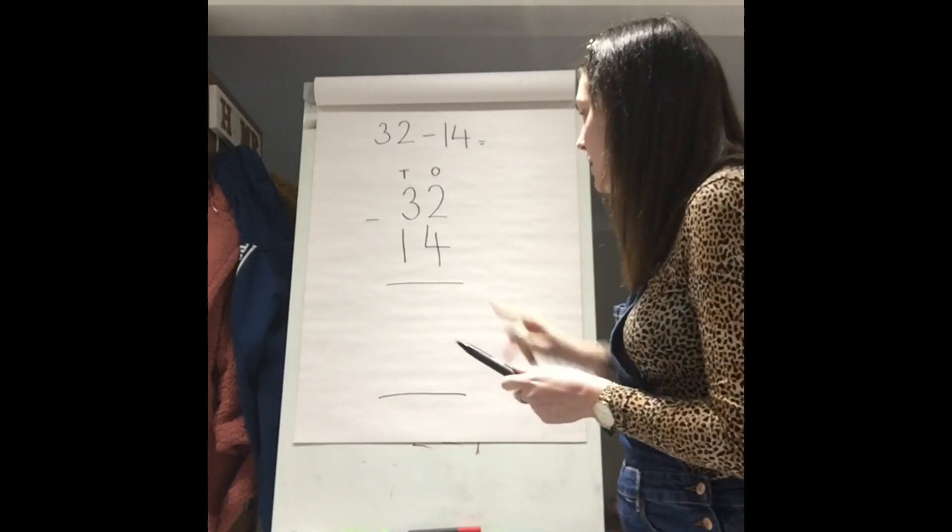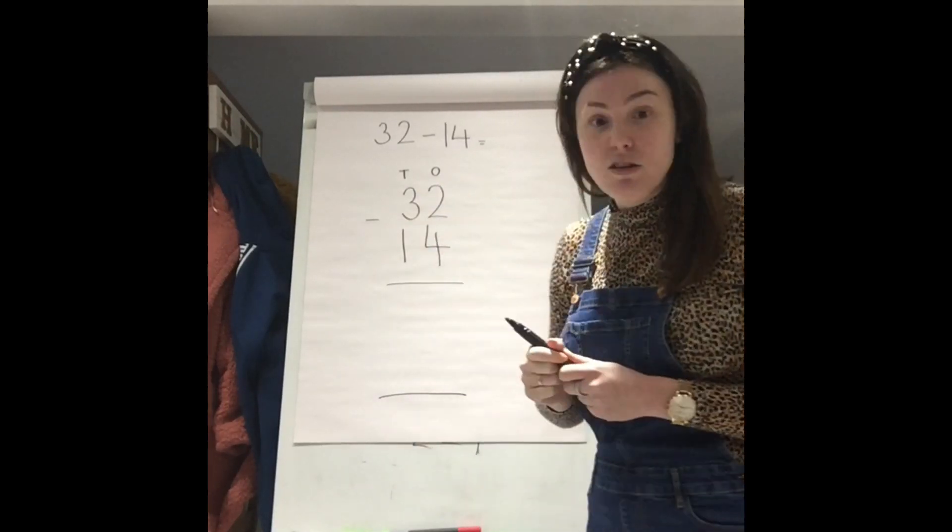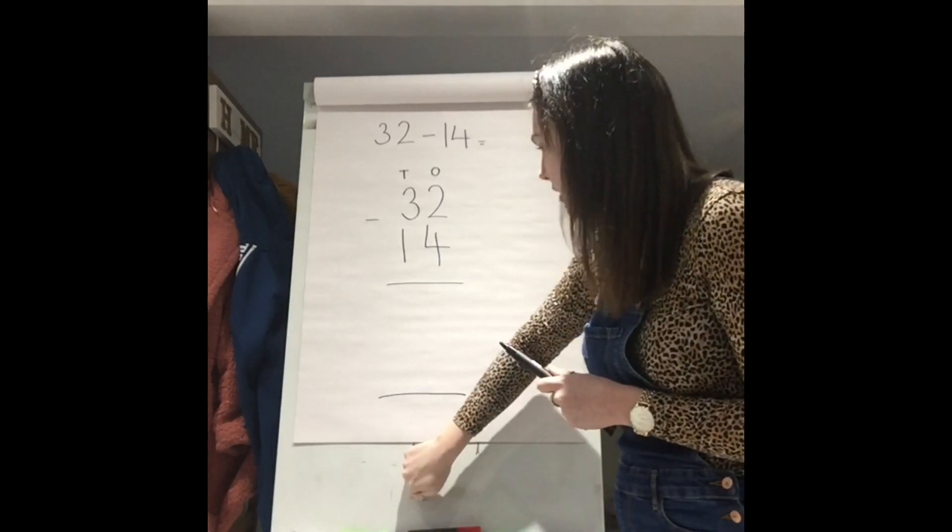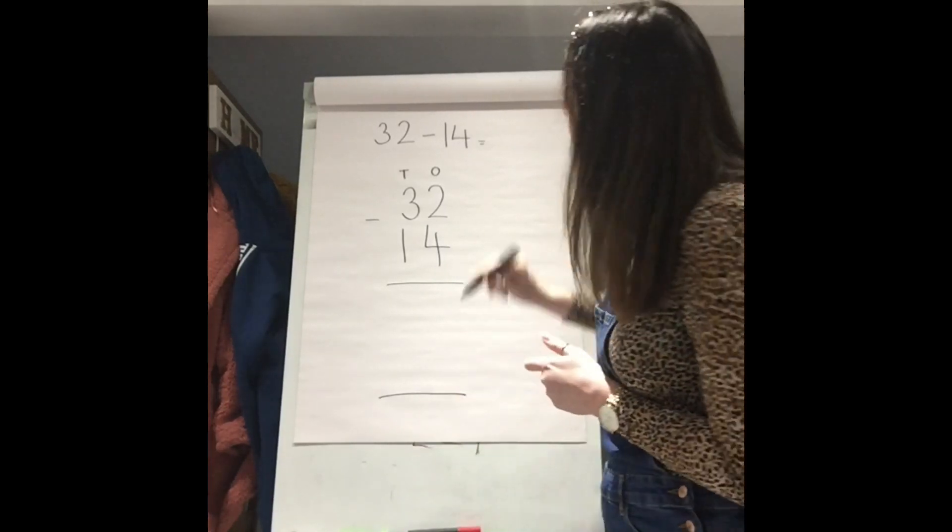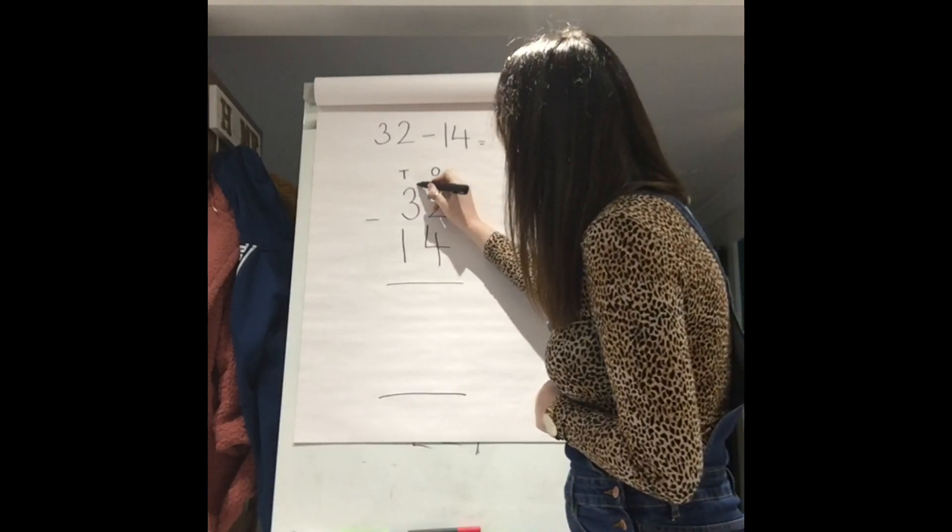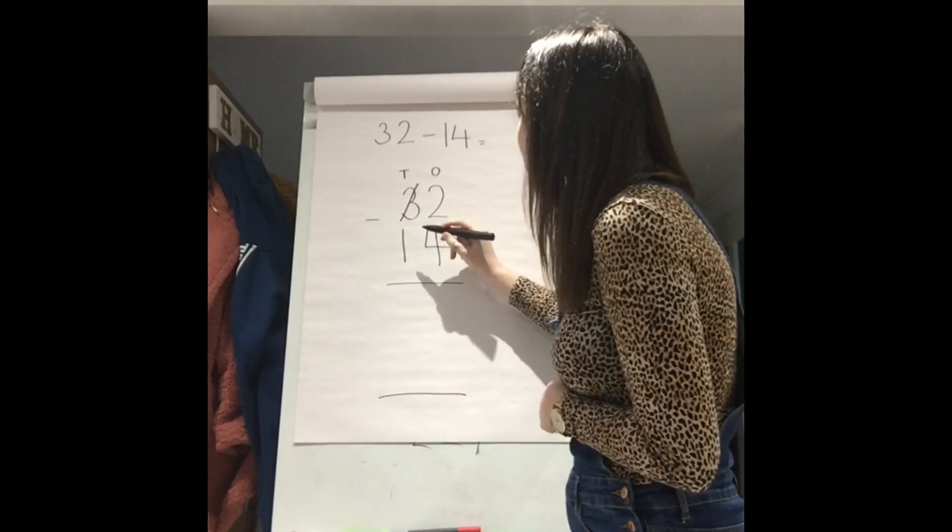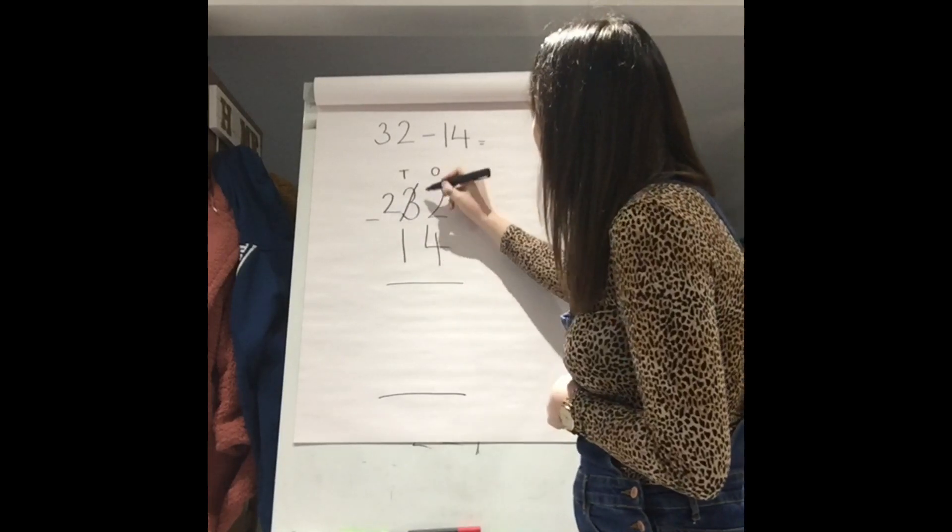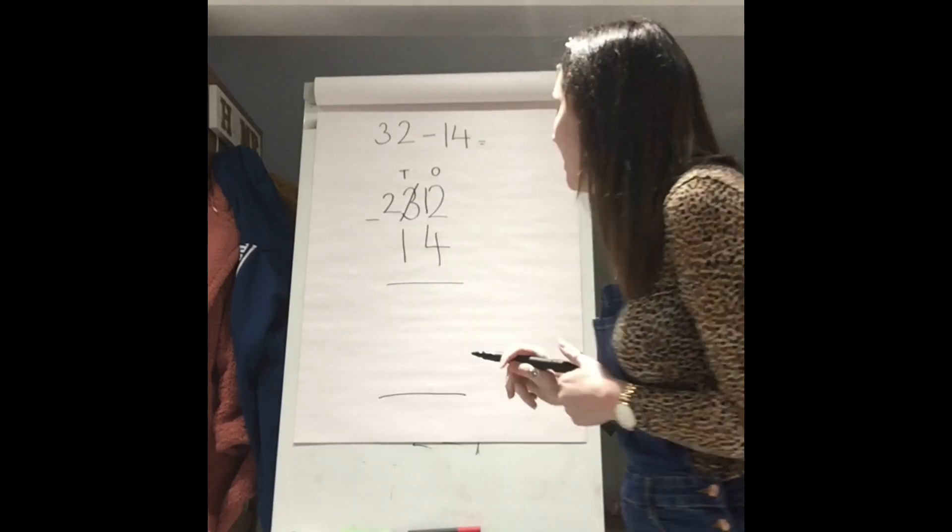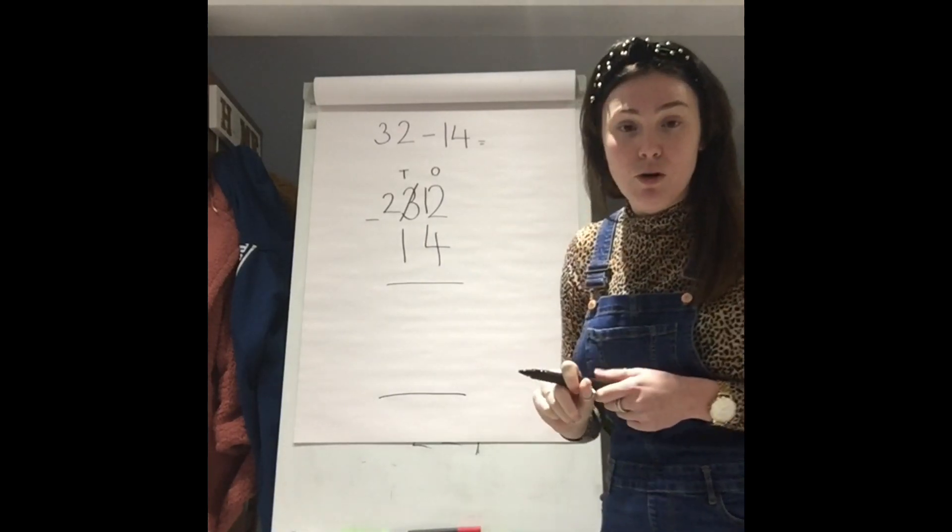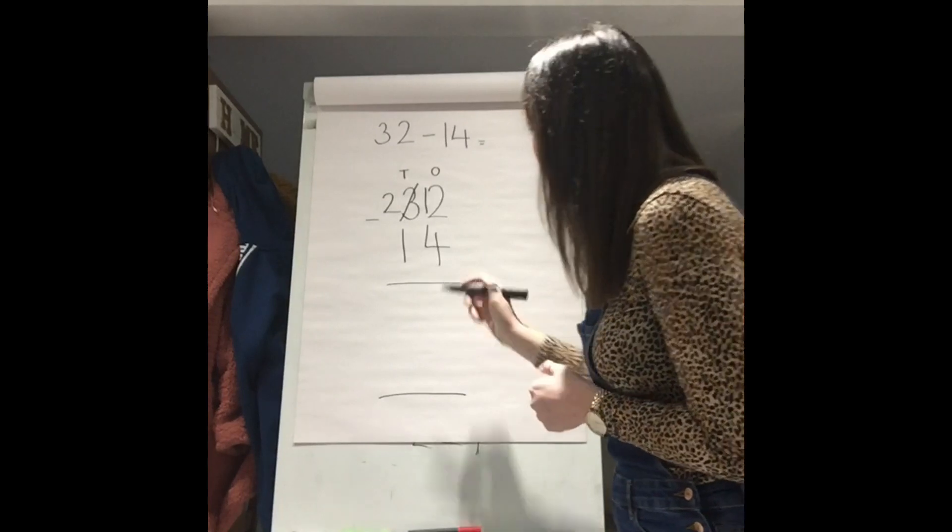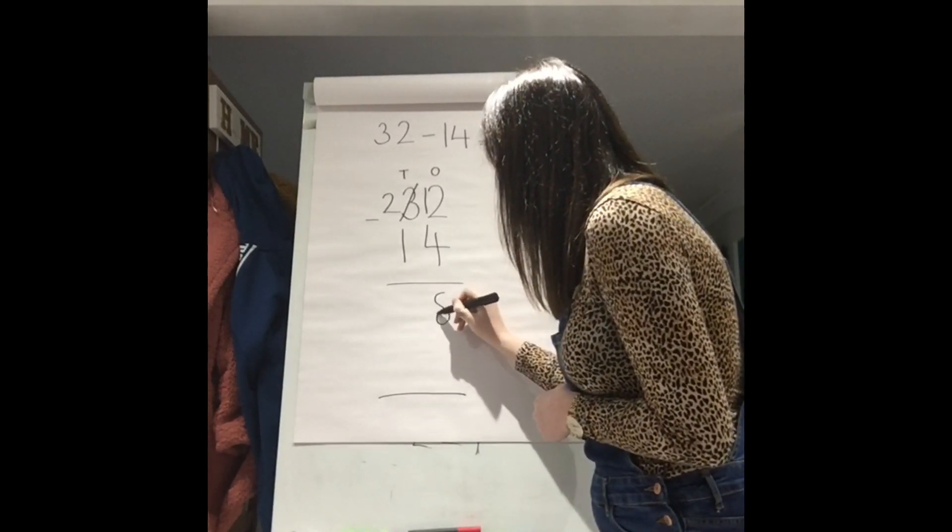We're going to have to knock next door to 30 and ask if we can exchange one of its 10s. So, as that's knocking next door, we have exchanged a 10 from 30 making it 20. And I've exchanged and put the 10 here. So now it's not 2 take away 4, it's 12 take away 4, which we can do. And 12 take away 4 is 8.